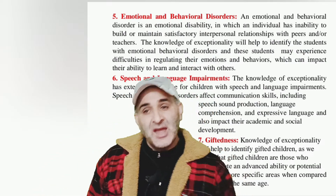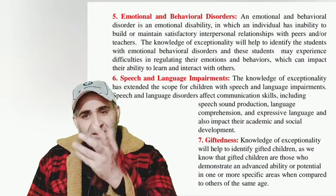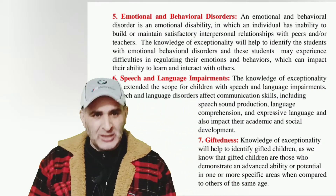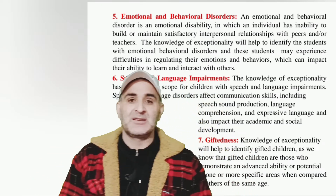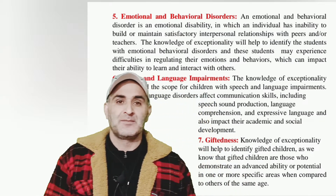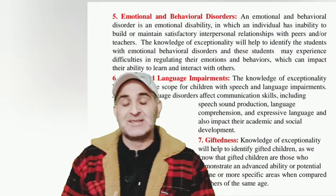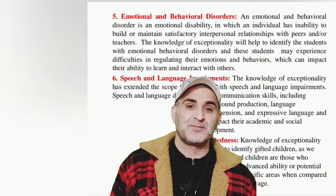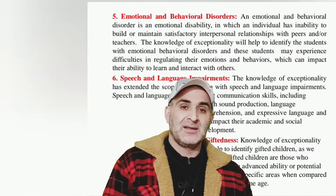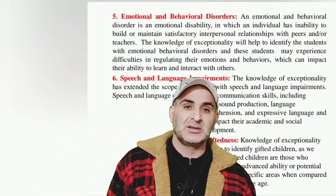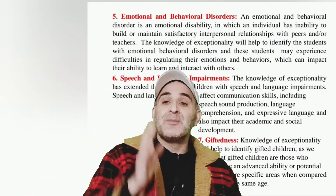Number five: Emotional and Behavioral Disorder. An emotional and behavioral disorder is an emotional disability in which an individual has the inability to build or maintain satisfactory interpersonal relationships with peers and other persons — it may be parents as well as other society members. These children suffer from emotional instability. Commonly, anxiety, depression, and low mood are found among these children. The prominent emotional and behavioral disorders include conduct disorder, anxiety disorder, and by and large mood disorder. This is why the significance and scope of exceptionality is very much broad, because knowledge of exceptionality helps us to identify the problems and types of emotional and behavioral disorders.